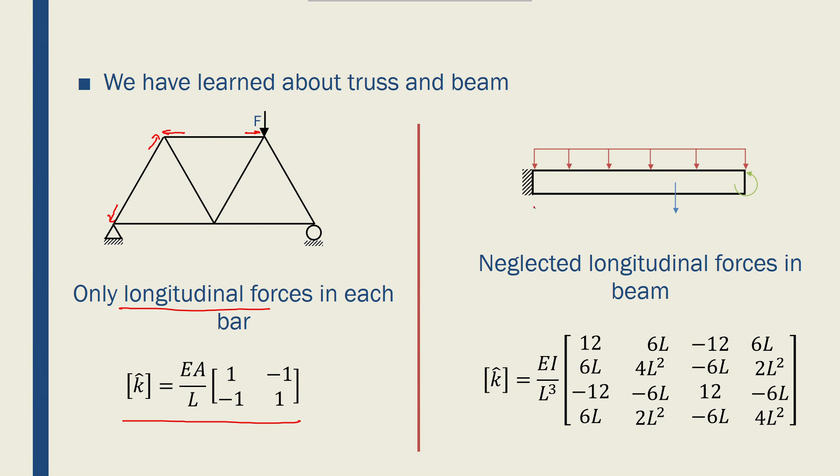When we started beams, we said that we neglected longitudinal forces so each node would have force in that direction which is a shear force. We could call it Fy and moment Mz, and this was the local stiffness matrix for a beam element.